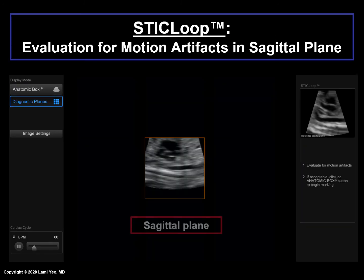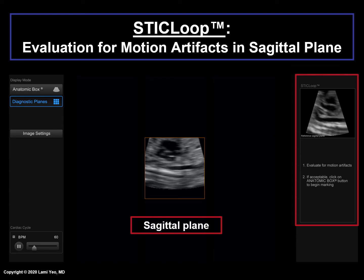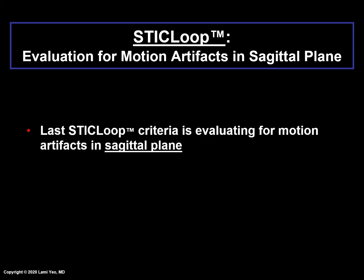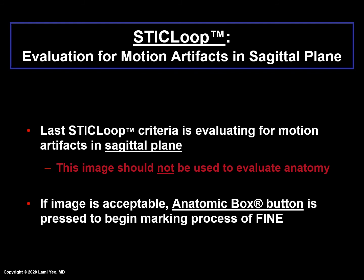The next image that will appear is a sagittal plane of the fetal heart, and there is a new panel on the right which provides further instructions. This panel states that the purpose of the sagittal plane is to evaluate for motion artifacts, and if acceptable, the user should click on the anatomic box button to begin the marking process for the FINE method. There is also a new reference image of the sagittal plane. The last STICLOOP criterion is evaluating for motion artifacts in the sagittal plane. Note that this image should not be used to evaluate anatomy — it is only used to evaluate for motion artifacts. If the image is acceptable, the anatomic box button should be pressed.